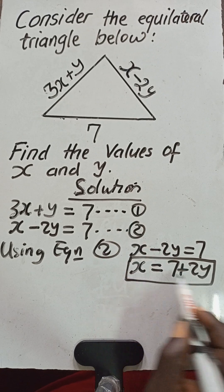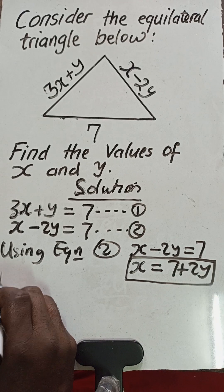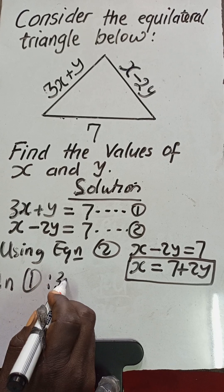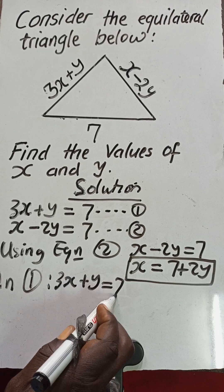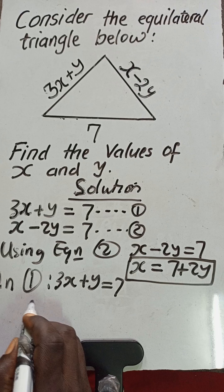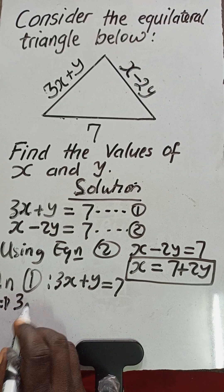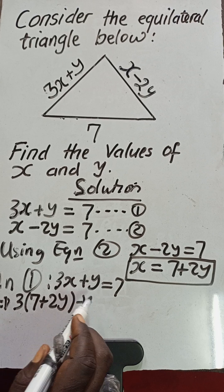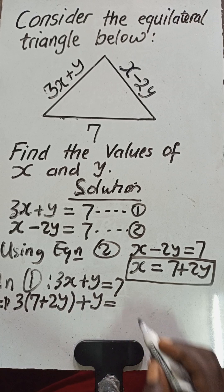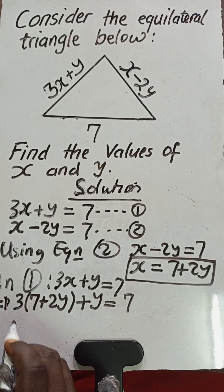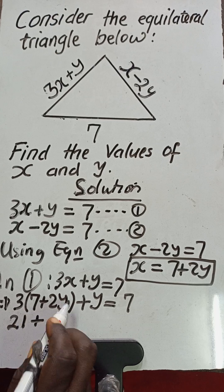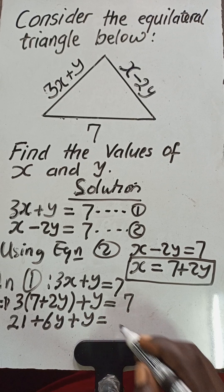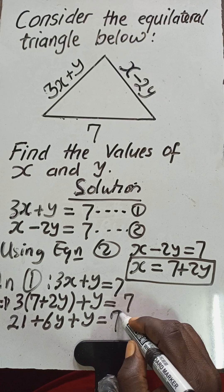In Equation 1, which is 3x plus y equals 7, wherever we find x we substitute 7 plus 2y. This gives us 3 times (7 plus 2y) plus y equals 7. Opening the parenthesis: 3 multiplied by 7 is 21, and 3 multiplied by 2y is 6y, so we have 21 plus 6y plus y equals 7.